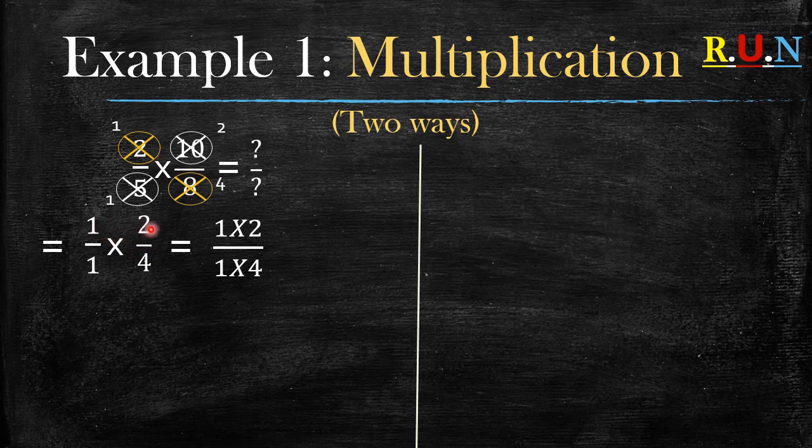We multiply the numerators and the denominators. So what's one times two? Equals two. What's one times four? Equals four. From this part you can actually divide with your calculator, two divided by four, which will give you 0.5 which is the same as one over two. Or if you don't have a calculator you can use the highest common factor and divide both the numerator and the denominator by the highest common factor.